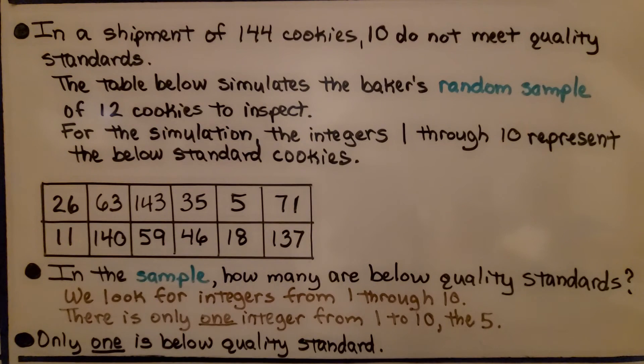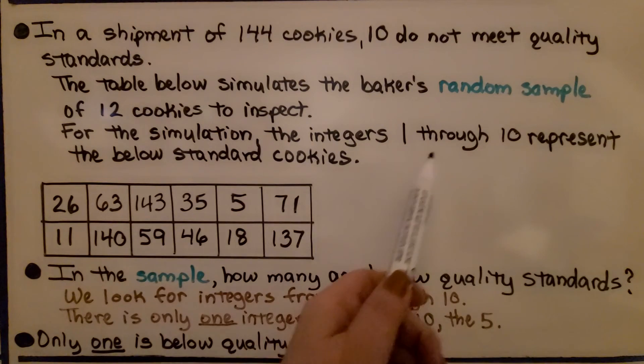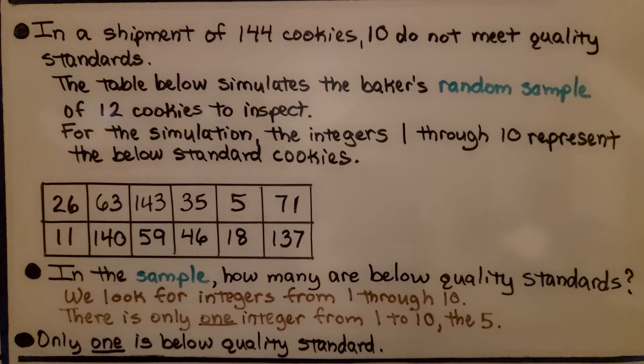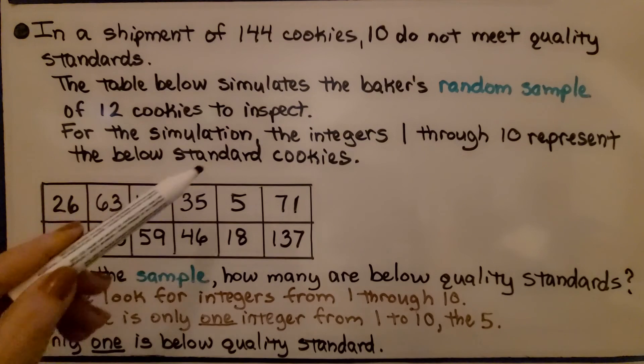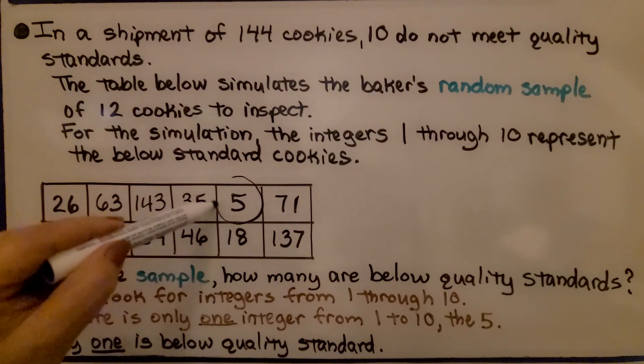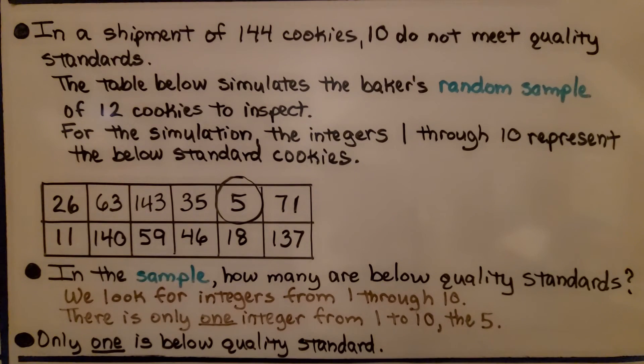In the sample, how many are below quality standards? So we look for integers from 1 through 10, because that's representing the below standard cookies. And out of all of these, there's only one cell that is 1 through 10, and it's this one. It's the 5, so only 1 is below quality standard. We just looked for the number that fell between 1 to 10.